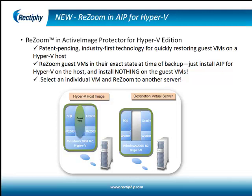Now, thanks to Active Image Protector's patent-pending resume technology, when restoring an incremental backup, users can select the image they want and AIP will restore the entire system, or the administrator can select just one or several machines to restore. When rebooted, they will be in the same state as when they were backed up.